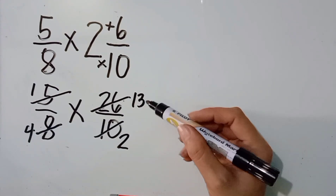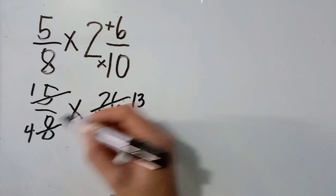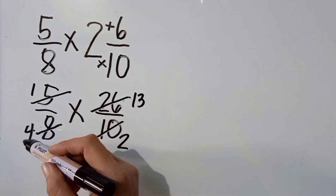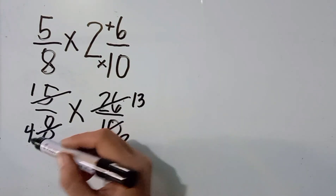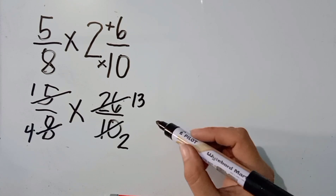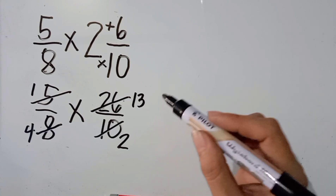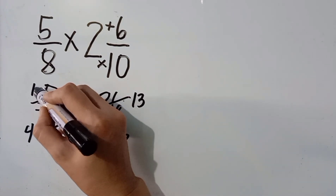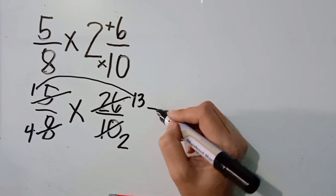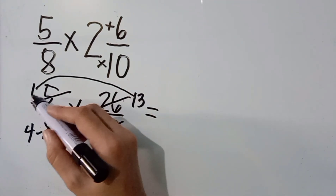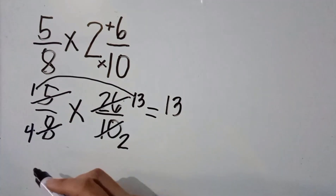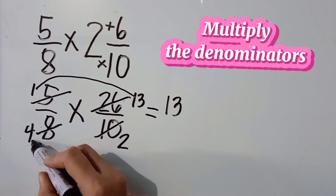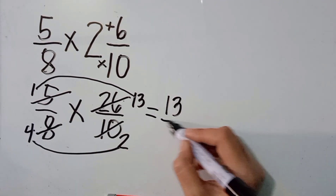Next. Tinan ulit natin kung may common factor pa. Vertically and diagonally. 13 at saka 2, may common factor pa? Wala na po. How about 1 over 4? Wala na rin. Diagonal? Wala na rin po. So, kung wala na, the next step that we are going to do, we are going to multiply the numerators. So, ang ating numerators dito ay yung 1 at saka yung 13. So, let us multiply. 1 times 13, the answer is 13. Ano naman po ang ating denominators? We are going to multiply now the denominators. Ayan po ay 4 at saka 2. So, 4 times 2, the answer is 8.